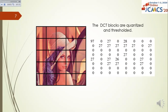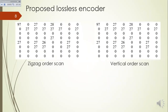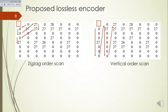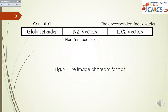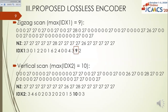The DCT blocks are quantized and thresholded. The well-known differential DC encoding is used to encode the DC coefficients. To encode the rest of the block, the proposed encoder uses two scan orders — zigzag and vertical — for reading the DCT blocks. The resulting vectors show the bolded values as the maximum values of the index vectors; the smallest such maximum is 9. Thus, for this block, the best scan is the zigzag scan order.